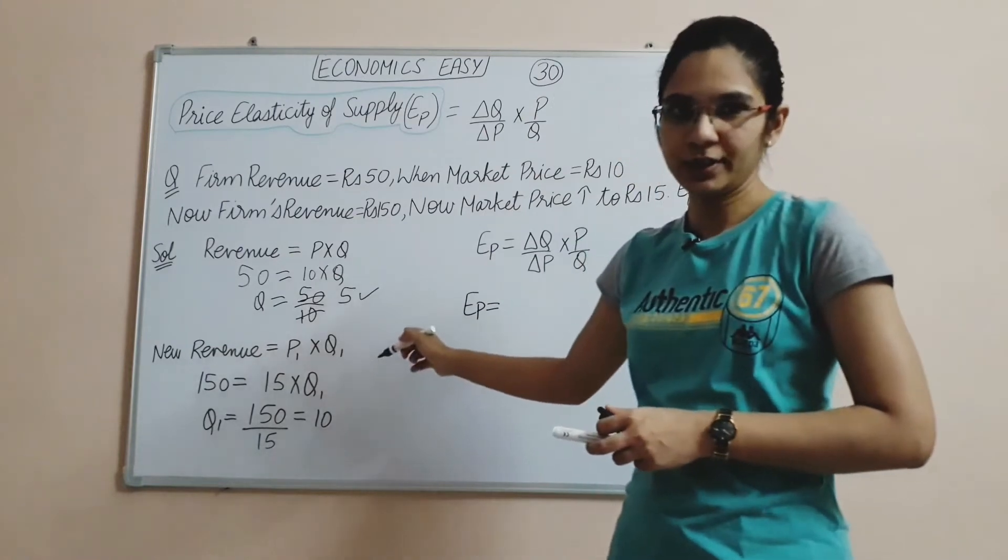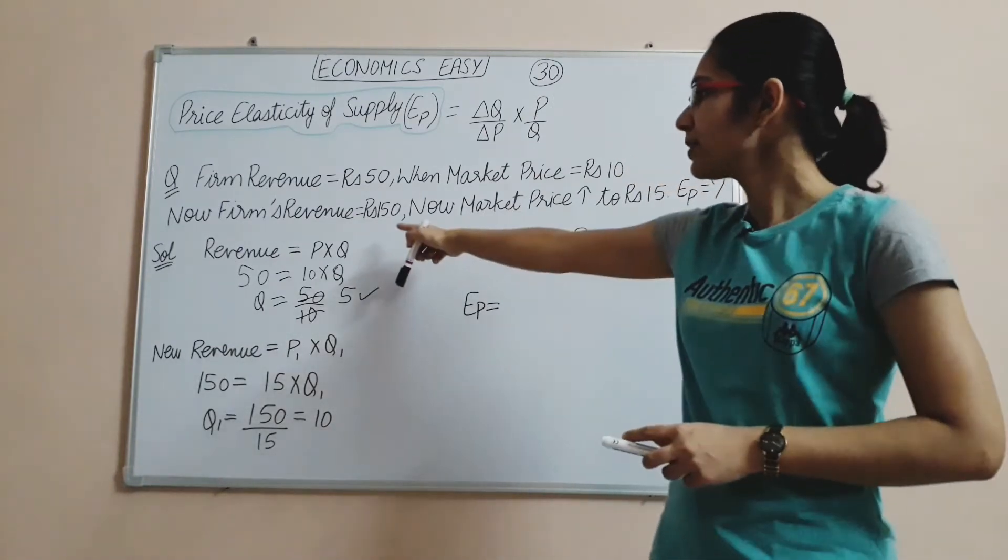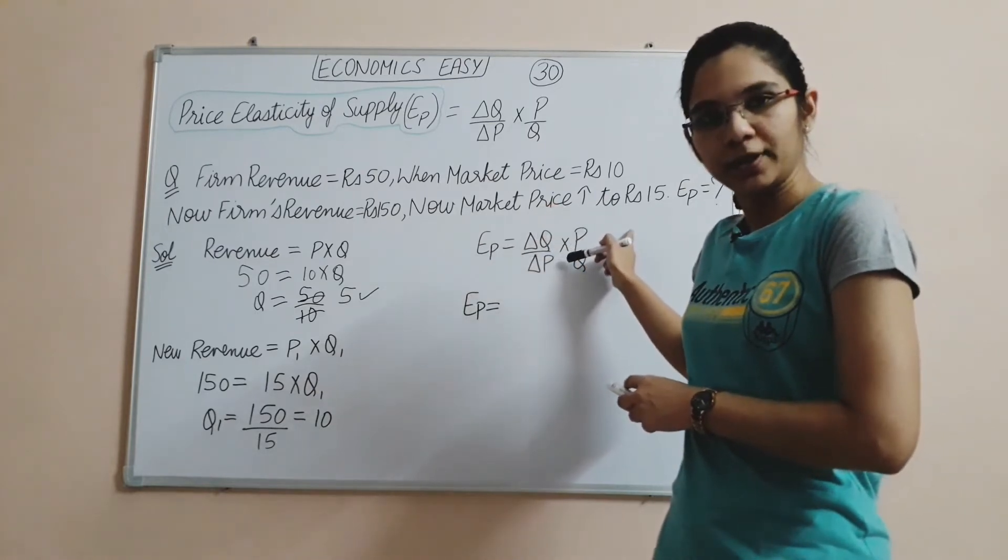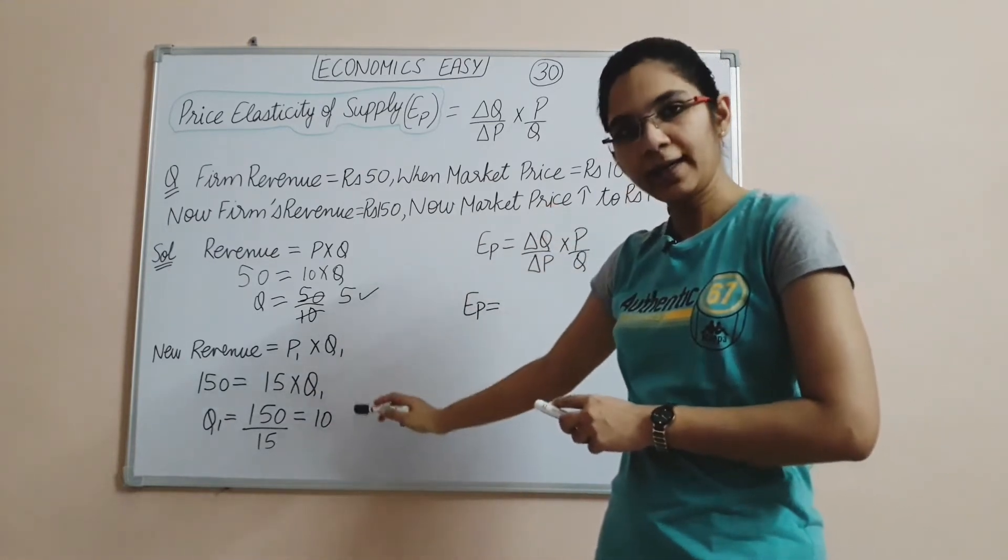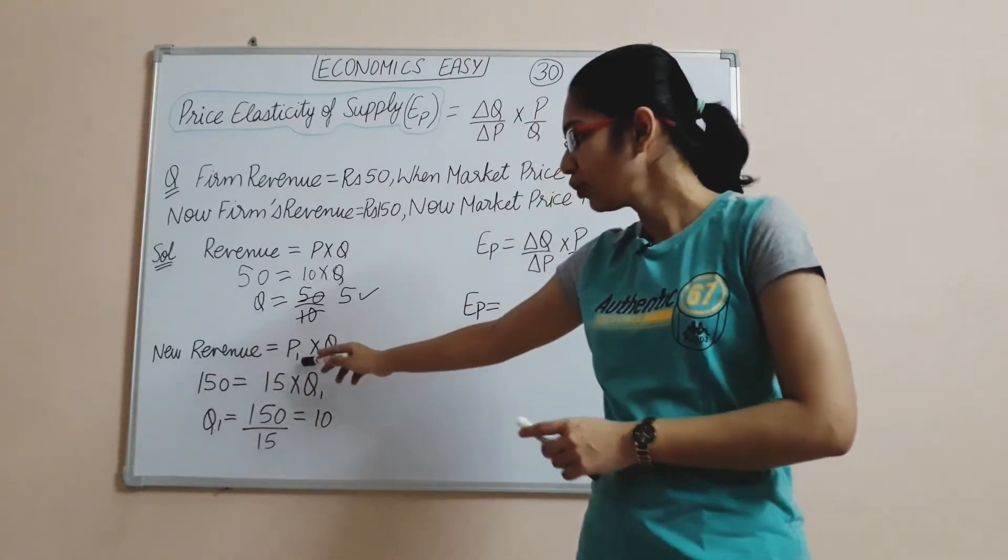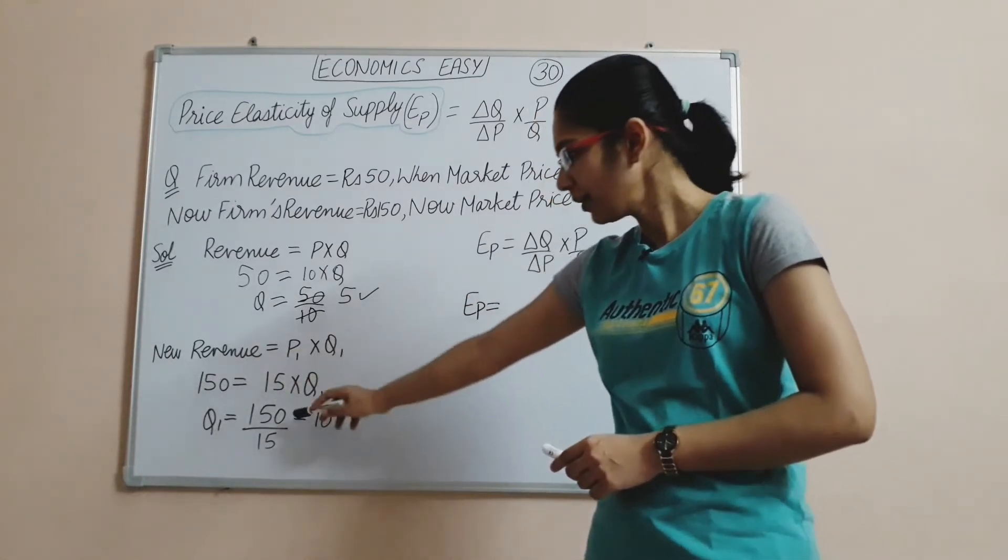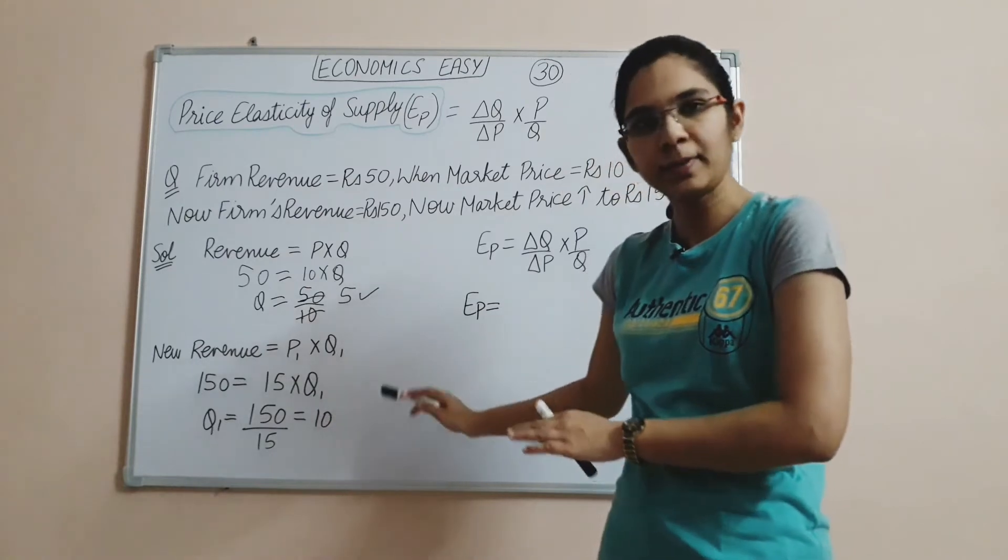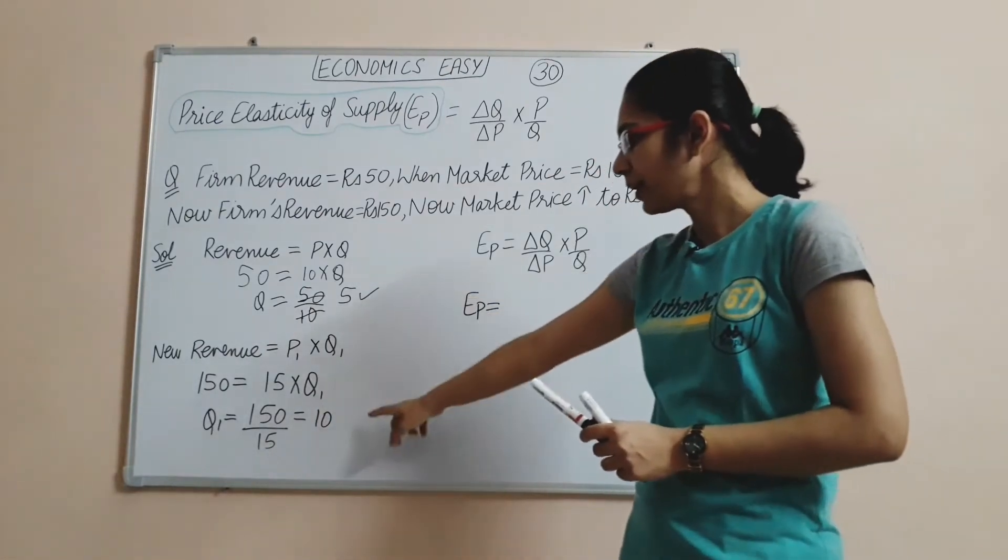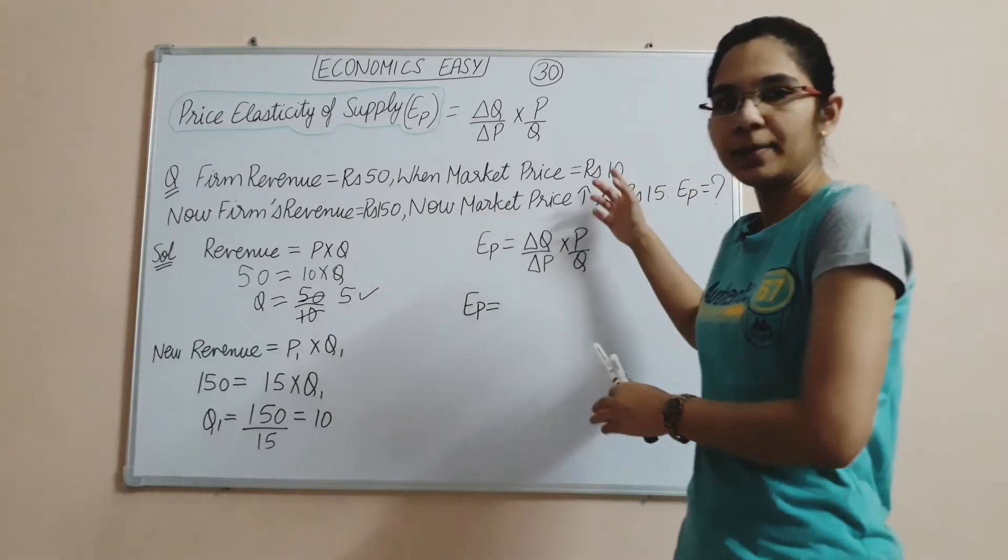In the same way, I will find the new quantity. Revenue is 500 rupees, market price is 15 rupees. Revenue is 500, new price is 15, so new quantity is 500 upon 15. Simple calculation. Now let's see, I have original quantity and new quantity, original price and new price.